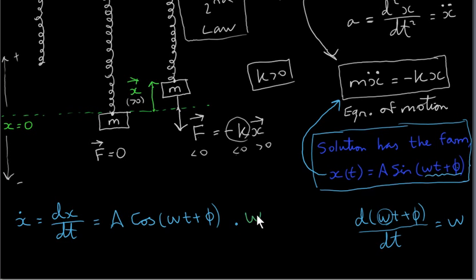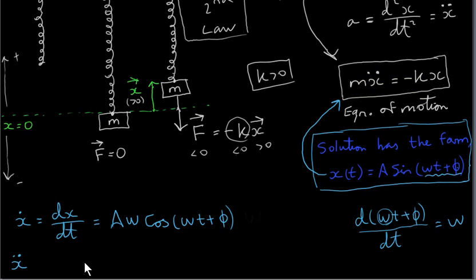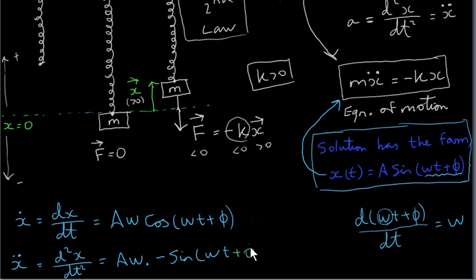Now let's get the second derivative, x double-dot. The A omega is a constant factor. The derivative of cosine is minus sine, and by the chain rule we again differentiate the angle to get omega. Bringing the omega in front gives omega times omega, which is omega squared. So x double-dot equals minus A omega squared times sine of (ωt plus φ).